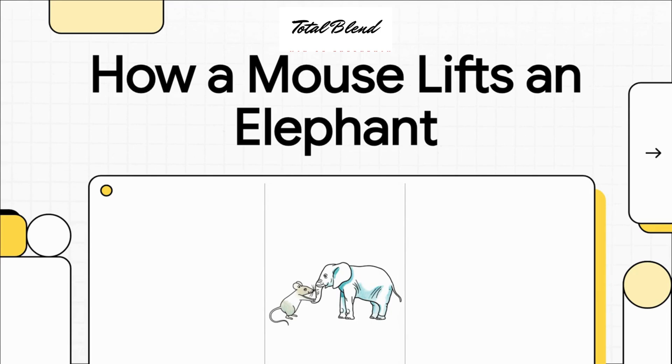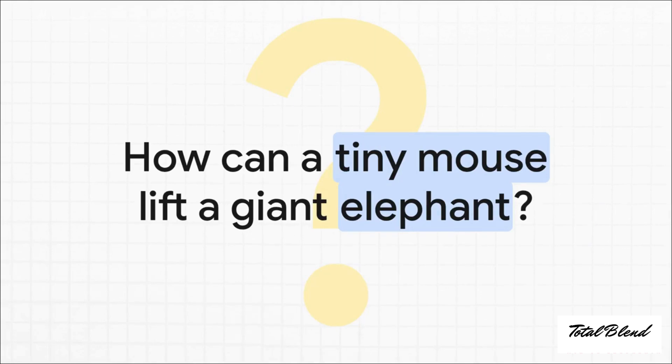How can a mouse lift an elephant? I mean, seriously, how is this possible? You've got this tiny creature weighing just a couple of ounces, and it's somehow supposed to lift something thousands and thousands of times heavier. It feels like it breaks the laws of physics, right? Well, it turns out the laws of physics are exactly what make it happen.